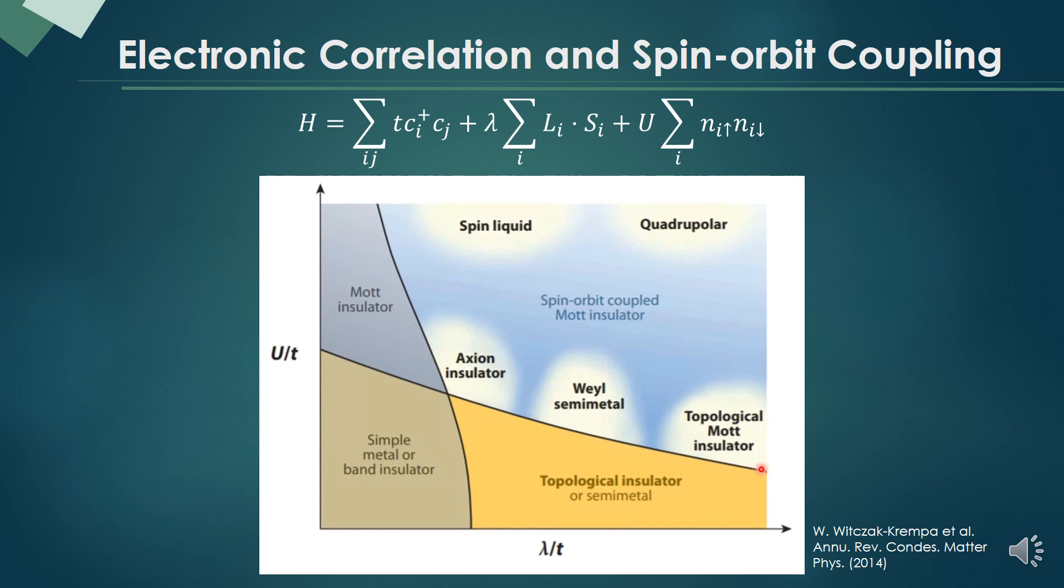The region where we are interested in is here, where λ and U are comparable to the bandwidth, because in this region correlated topological phases like Weyl semimetal, axion insulator, and spin liquid can exist. Our subject pyrochlore iridate is in this region, so we are going to study this material.